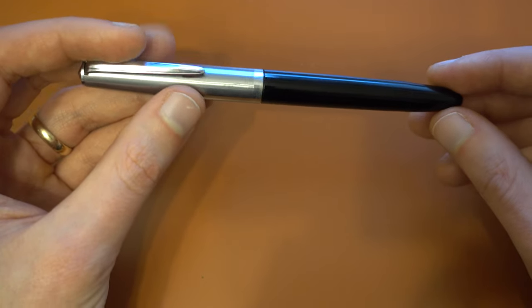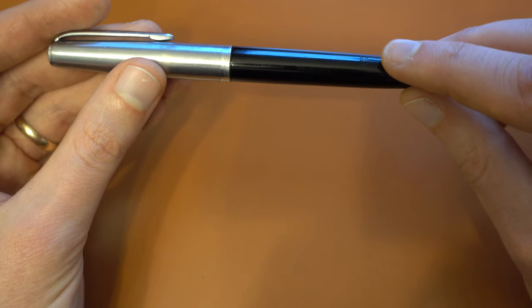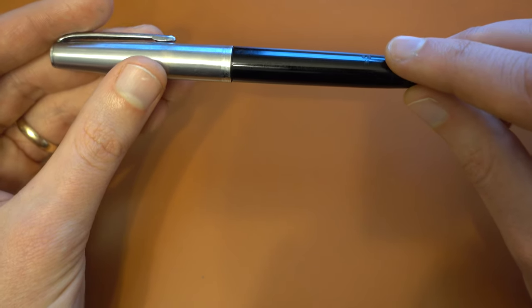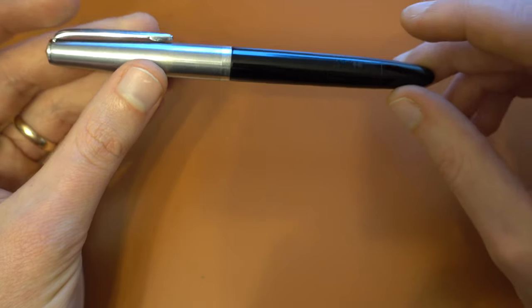But in fact, on the barrel here, it says 5G, which is the actual model. And then it says M, which just indicates that this has a medium nib.